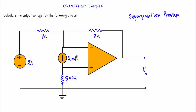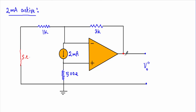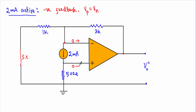Next, I will keep the 2 mA current source active and denote the output voltage as VO double prime. I will replace the voltage source with a short circuit. The output terminal is connected to the inverting terminal through the 3 kΩ resistor, so the circuit is again in negative feedback. When an op-amp is in negative feedback, VP equals VN, and the currents into both terminals are 0.